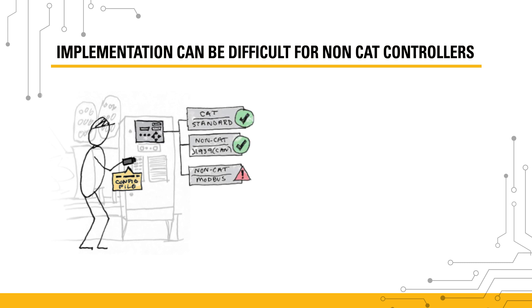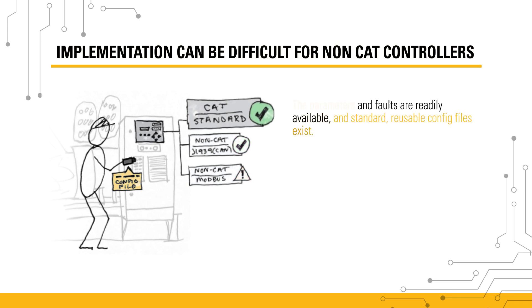CAT generator sets might use a CAT controller, or they might use a non-CAT controller. For CAT controllers, implementation is simple. The parameters and faults are readily available and standard, reusable config files exist, so no translation is needed.